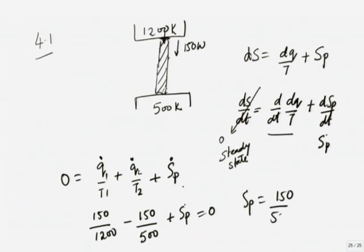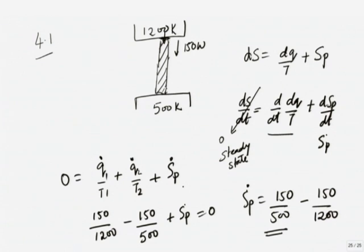S_p-dot equals 150/500 minus 150/1200. The signs are correct: 150 divided by the smaller number 500 is a bigger number. So S_p-dot is coming out a positive quantity which is getting produced — which is what we want. If it had come out negative, the process could not happen. So this will be some positive quantity you can calculate.